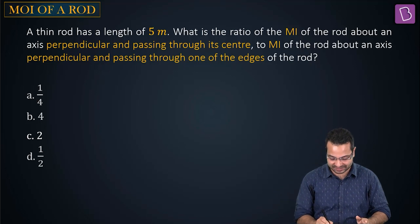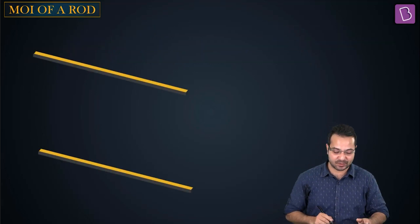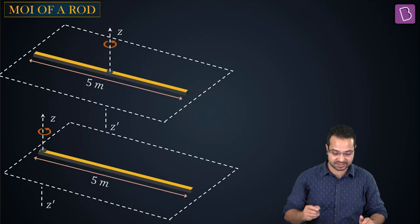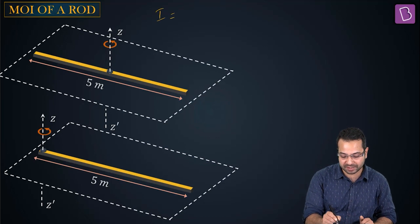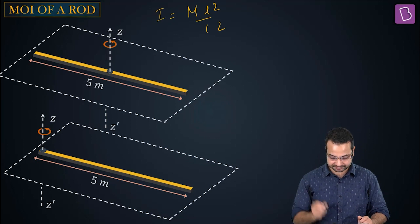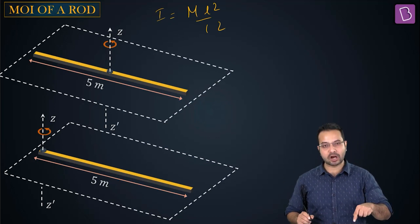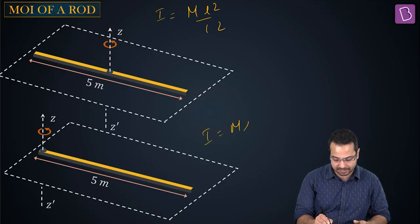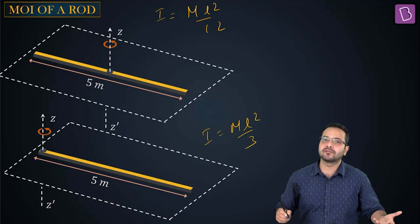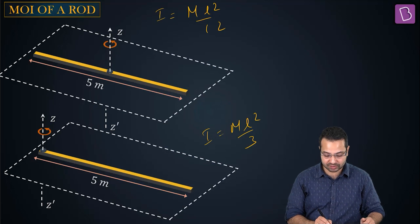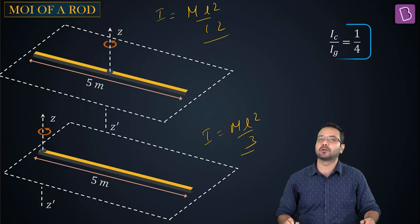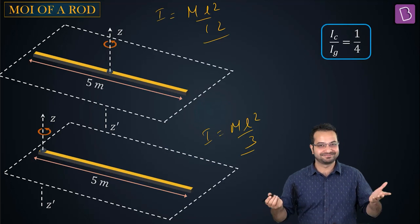The moment of inertia of a rod through its perpendicular bisector is ML²/12. The moment of inertia about the end is ML²/3. The ratio of these two is (ML²/12) divided by (ML²/3), which gives 1/4. The correct answer is 1 by 4.